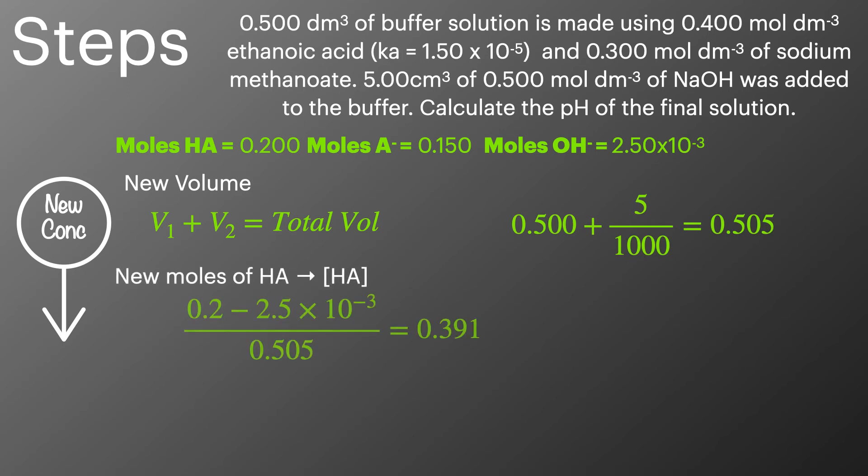We're then going to work out the moles of HA. To do that we're going to take the starting moles of HA and subtract away the moles of hydroxide ions. And then to work out the moles of A-, we're going to take the starting moles of A- and add on the moles of hydroxide ions.